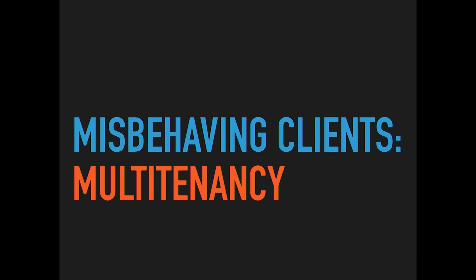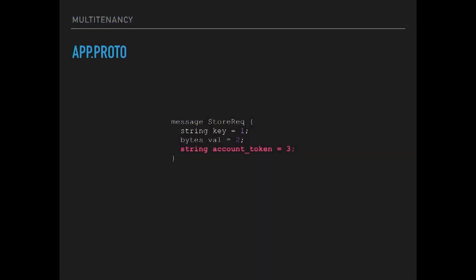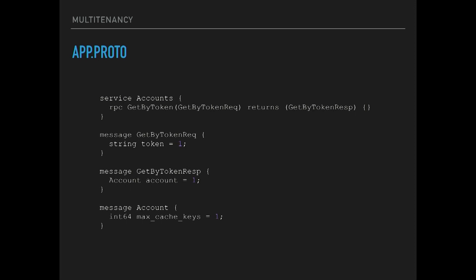You get paged because your box is handling a lot of traffic — the cache server has blown up and it's all coming from one client who just wanted to cache everything. To fix this, we could add multi-tenancy: a particular user or account can have so many keys devoted in the cache. We go back to our IDL and add a token field to the store request that identifies who you are. We'll also define a new account service with a getByToken method that returns an account object specifying how many keys that account is allowed to set.